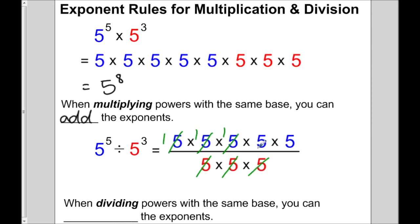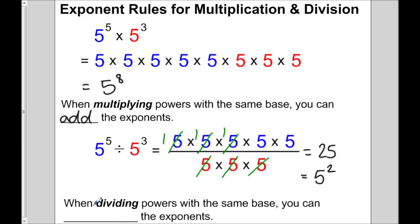So looking at what we have left: 1 times 1 times 1, which is 1, times 5 times 5, which is 25. And 25 is the same as 5 times 5, better written as 5 squared. We had exponents of 5 and 3 and ended up with 2. Well, 5 subtract 3 gives me 2. So when dividing powers with the same base, we subtract the exponents — we're basically taking away 3 of the 5s, leaving 2.